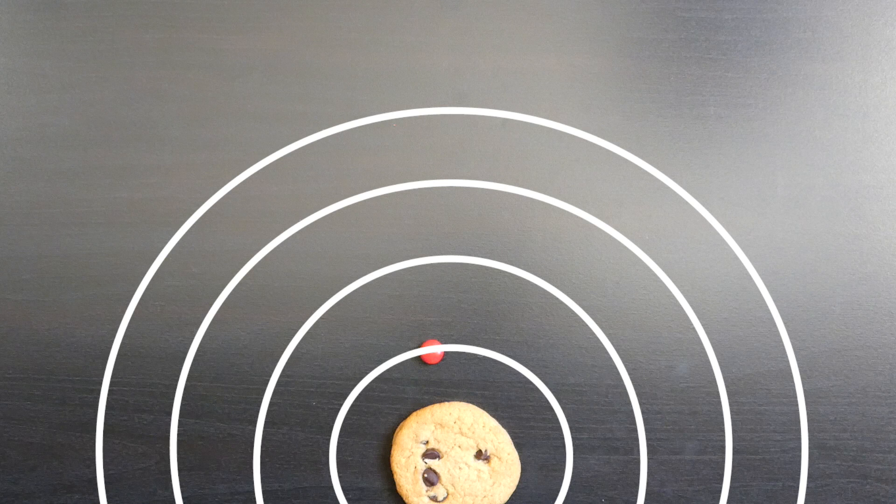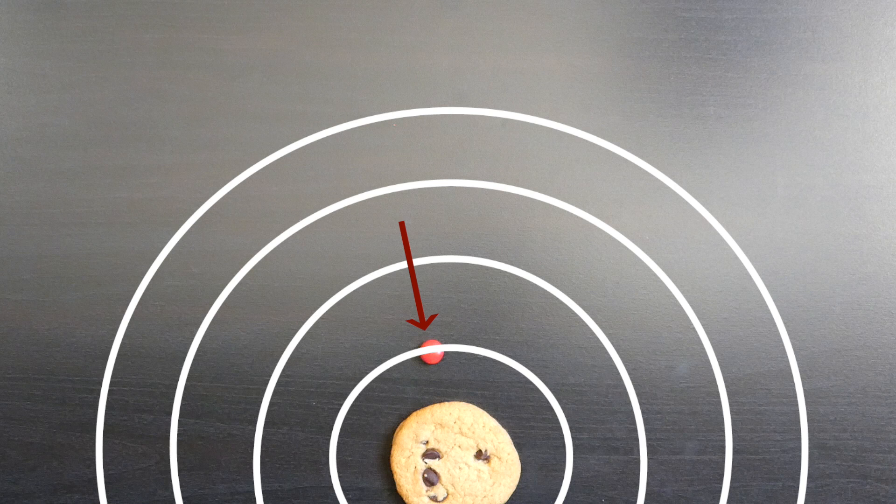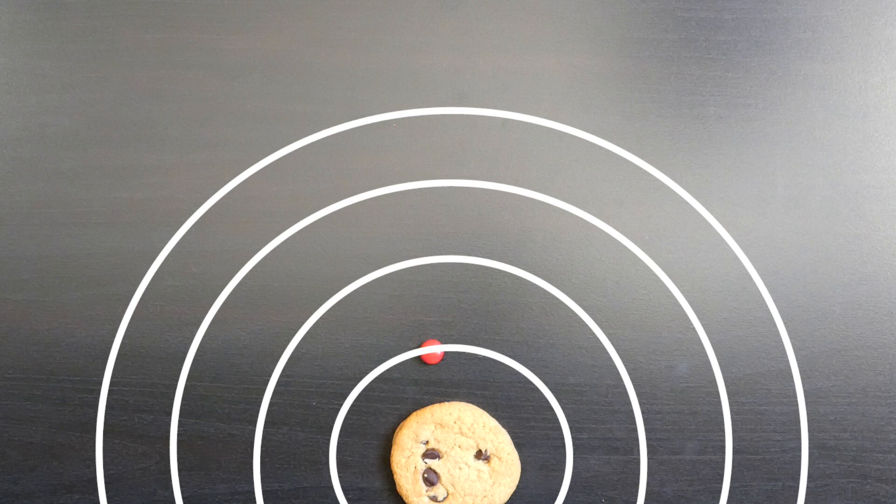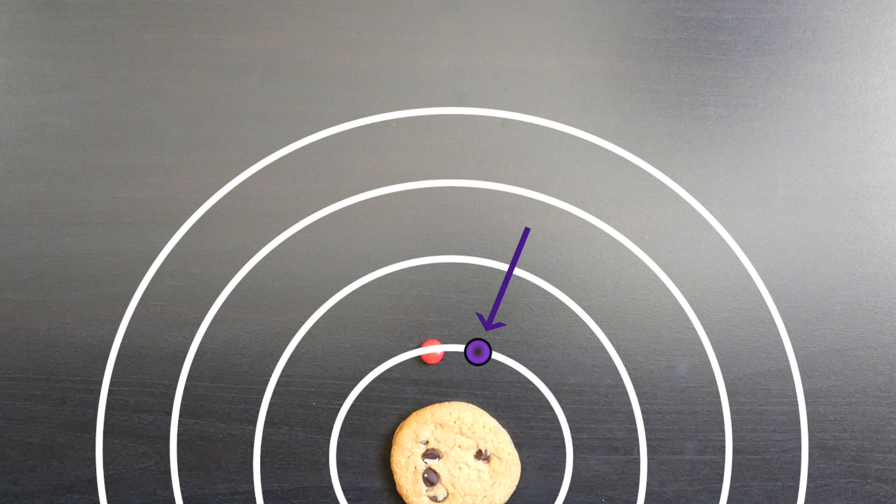They can be arranged in shells, represented by the curved lines in this model. The single electron in a hydrogen atom stays within the first shell, which is closest to the nucleus. At most, the first shell can hold two electrons, which means we still have room for one more. This hole represents a place where an electron could fit, it just isn't there yet.